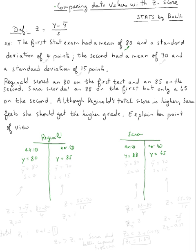So the first exam has a mean of 80 and a standard deviation of 4. So here we have to say y-bar is 80, s is 4, and then the second exam had a mean of 70 and a standard deviation of 15.